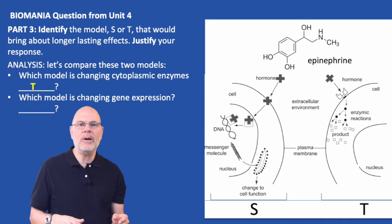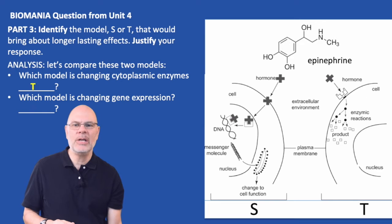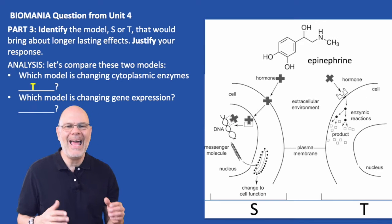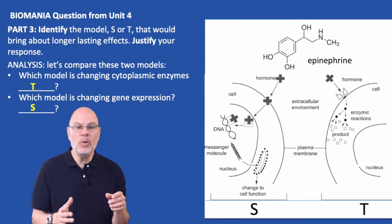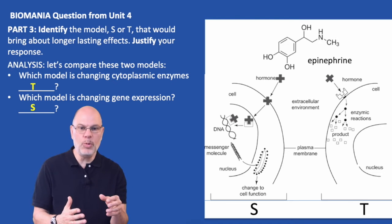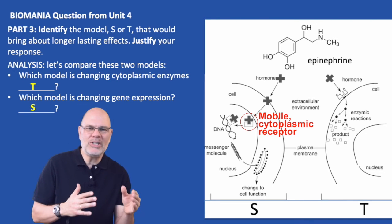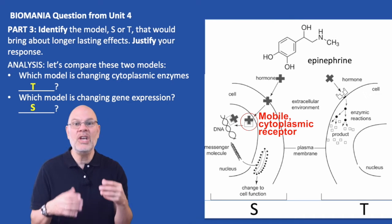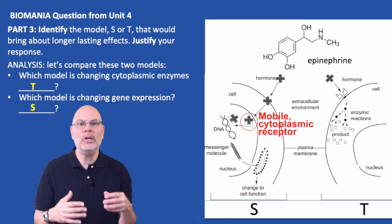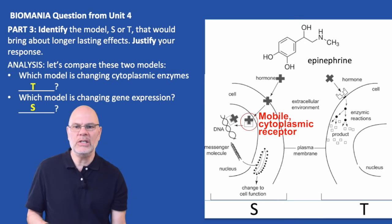Which model is changing gene expression? In this case, it's model S. The hormone actually goes through the membrane and will bind with a receptor. That receptor is going to carry that hormone-receptor complex into the nucleus. It'll interact with DNA, and it'll turn on genes.